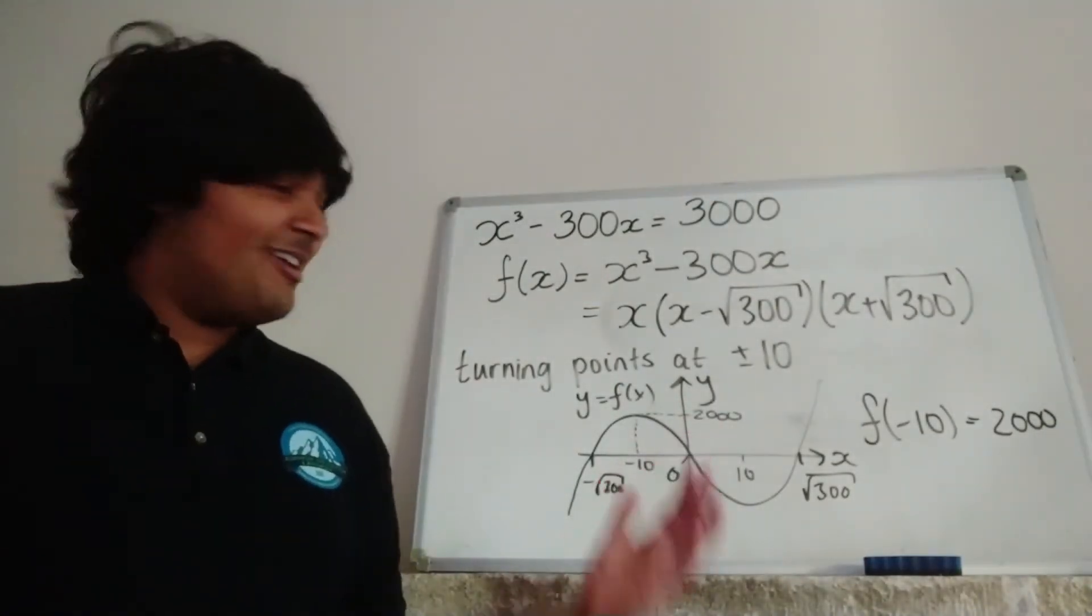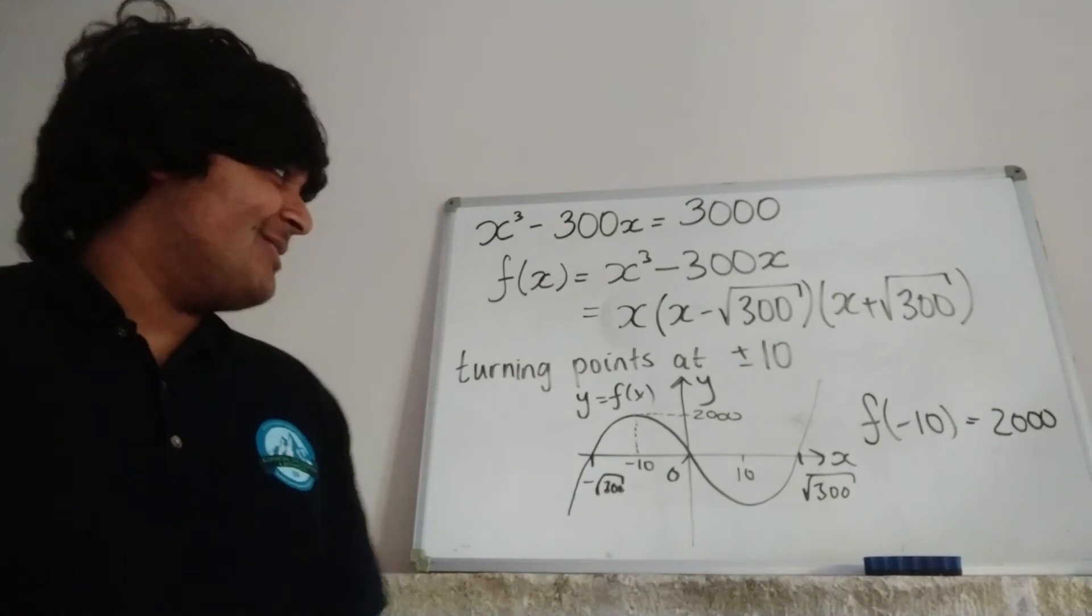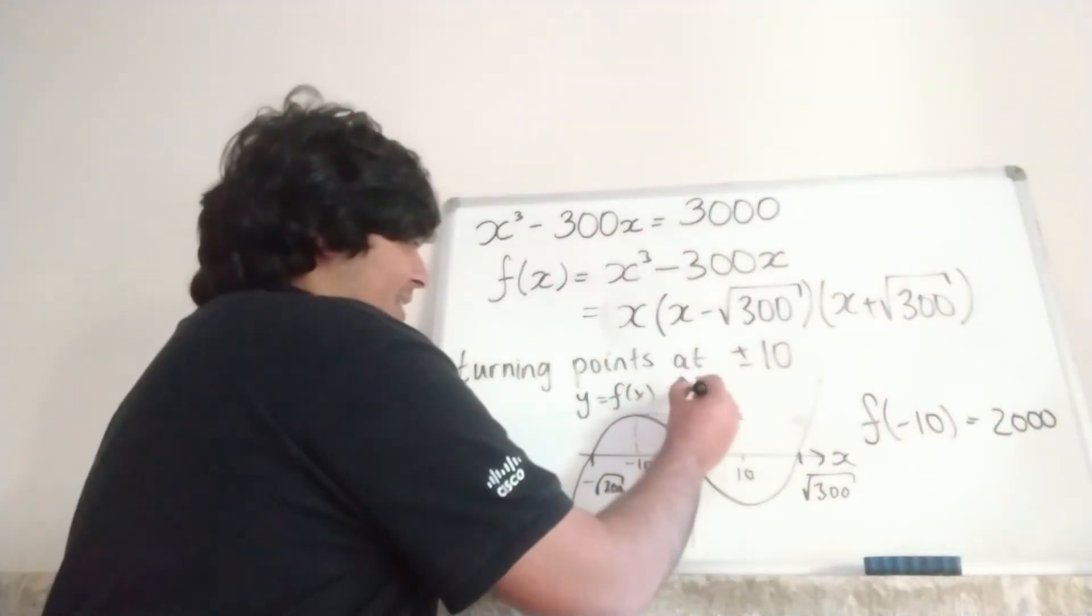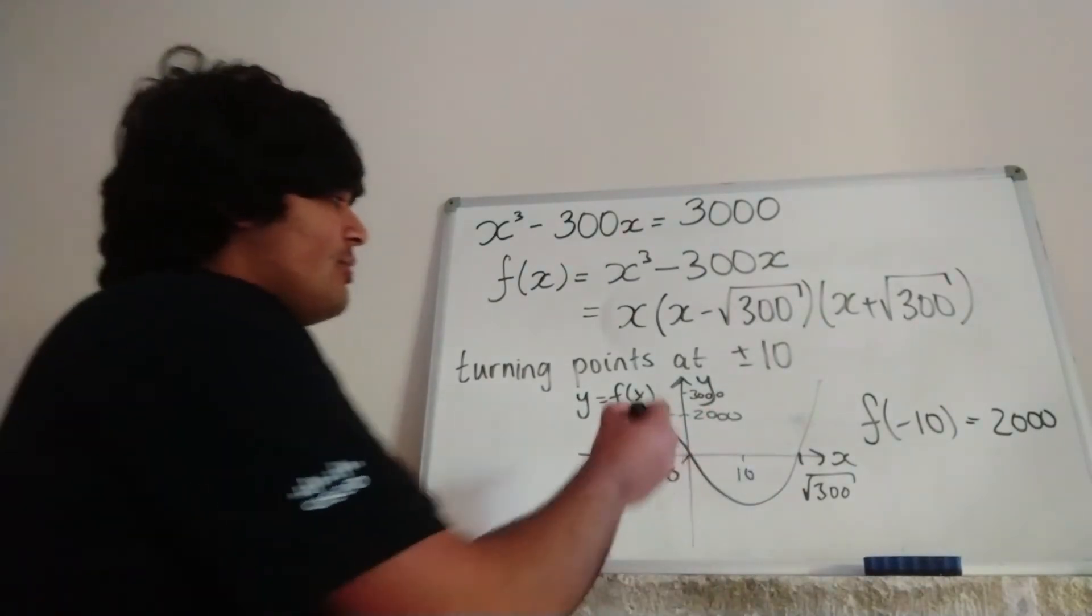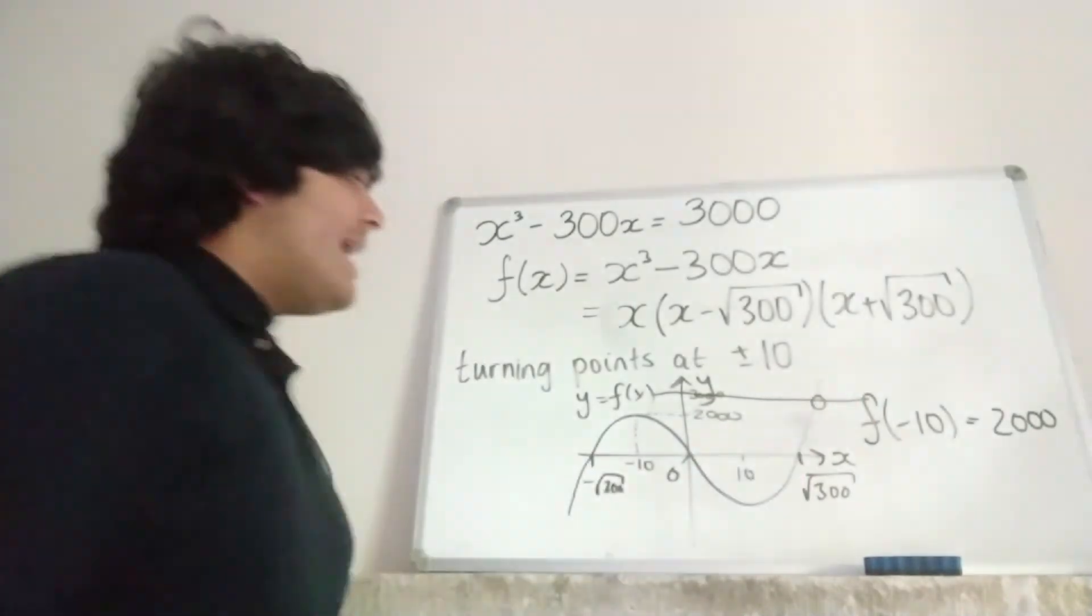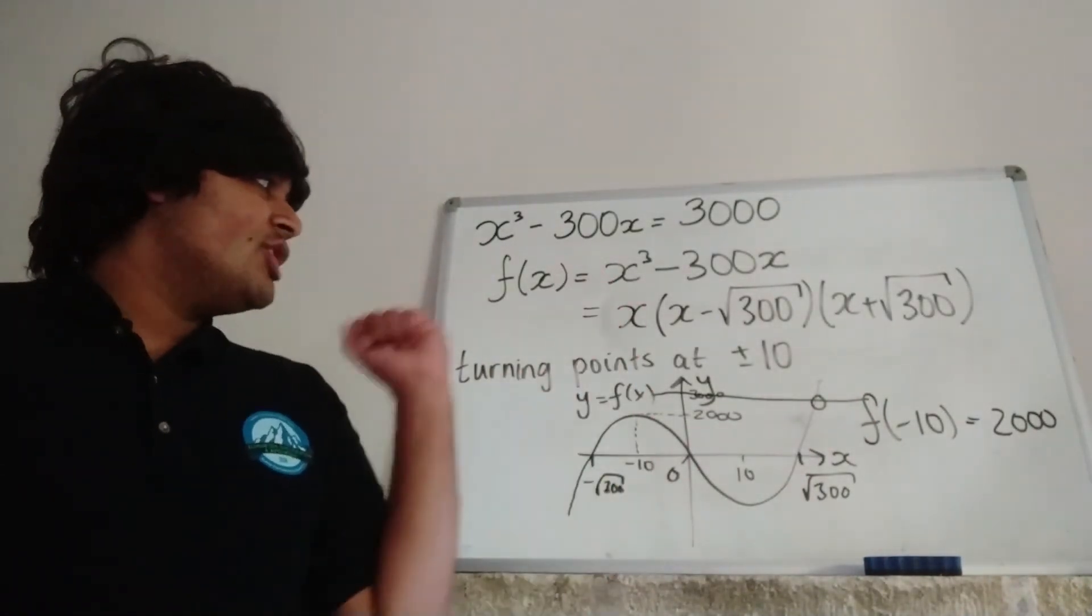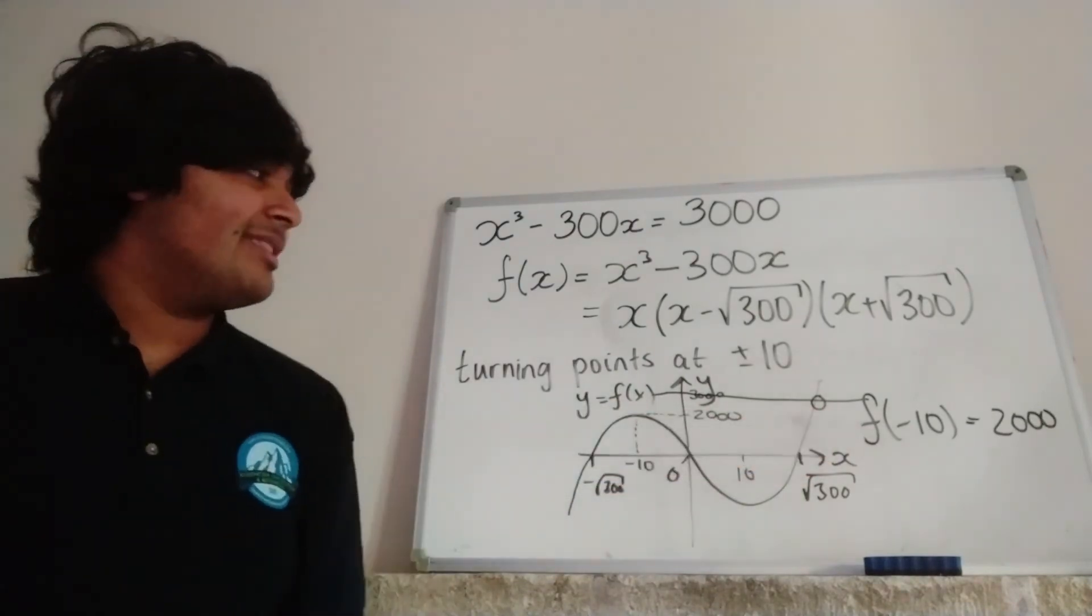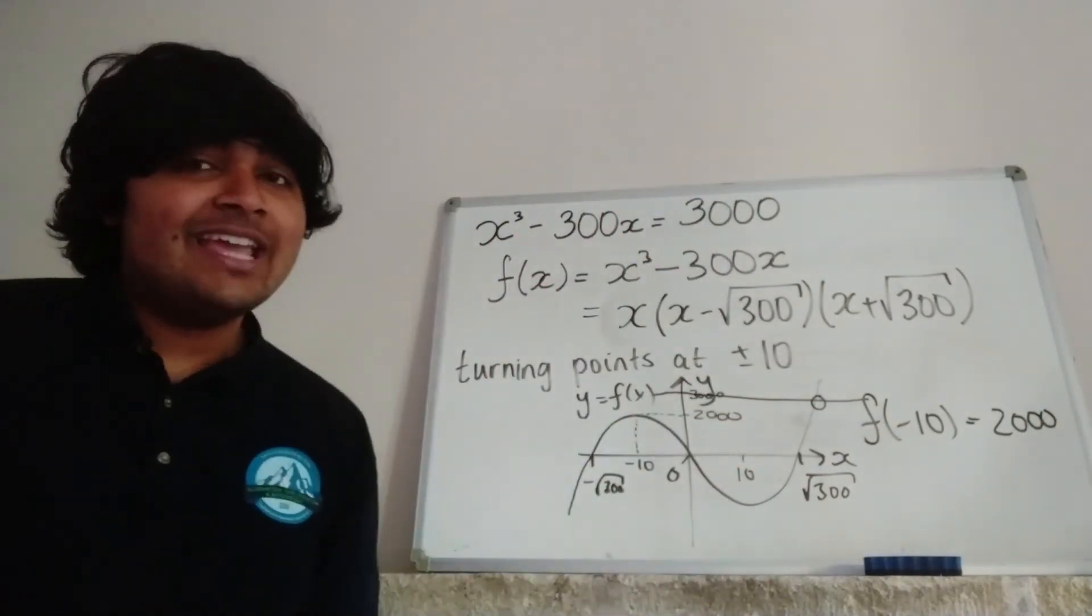Now, of course, big brain time, 2,000 is less than 3,000. So 3,000 is going to be somewhere here, roughly. So we can clearly see the graph y equals f of x only ever intersects the line y equals 3,000 once at that point there. So not twice, not three times, not an infinite number of times, just once at that point there. And that's the number of solutions, or real solutions, to this equation here is 1.